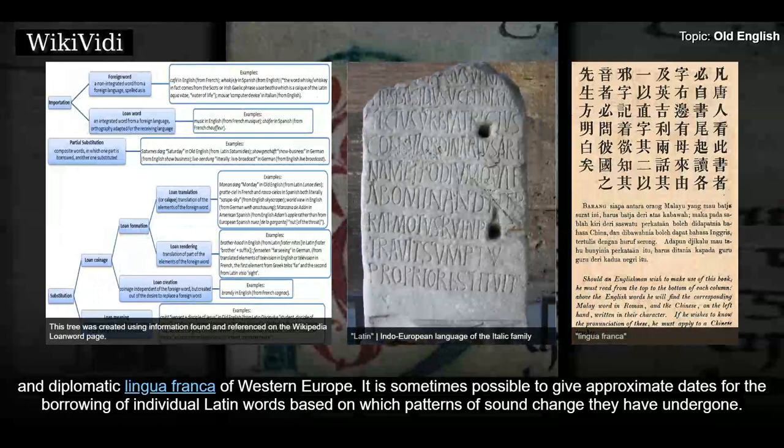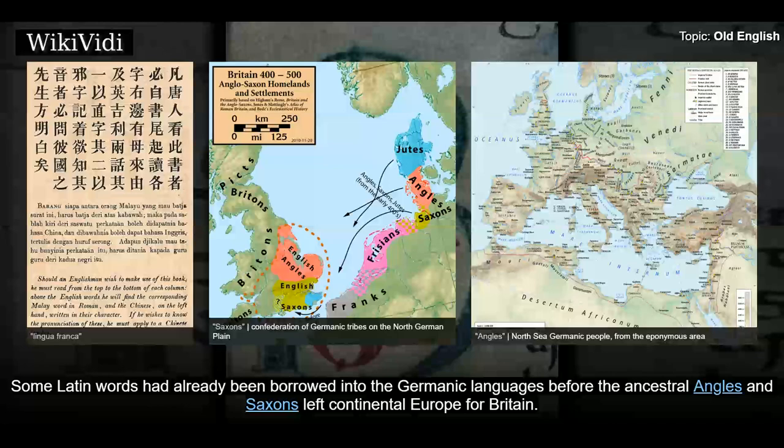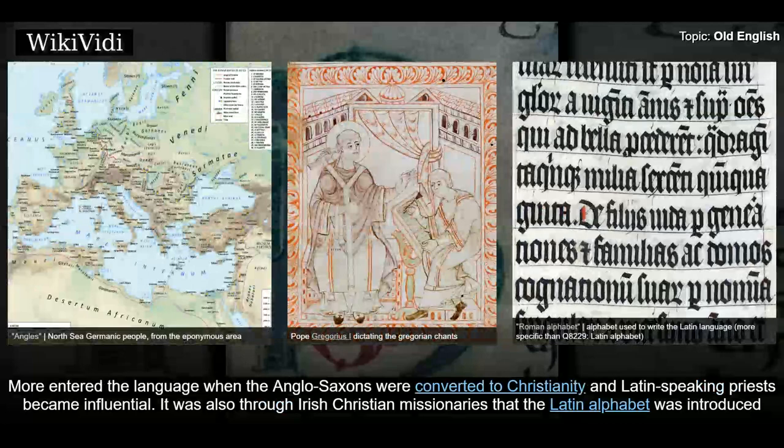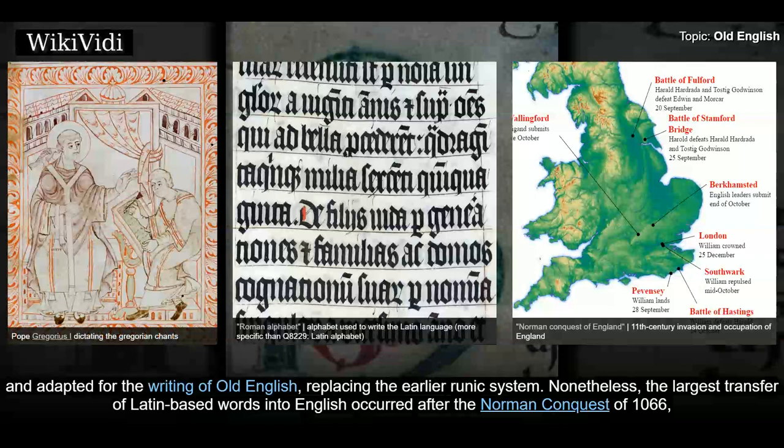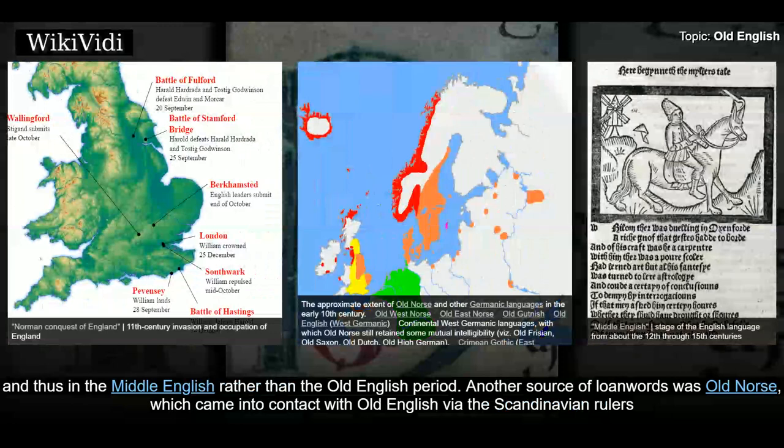It is sometimes possible to give approximate dates for the borrowing of individual Latin words based on which patterns of sound change they have undergone. Some Latin words had already been borrowed into the Germanic languages before the ancestral Angles and Saxons left continental Europe for Britain. More entered the language when the Anglo-Saxons were converted to Christianity and Latin-speaking priests became influential. It was also through Irish Christian missionaries that the Latin alphabet was introduced and adapted for the writing of Old English, replacing the earlier runic system. Nonetheless, the largest transfer of Latin-based words into English occurred after the Norman conquest of 1066, and thus in the Middle English rather than the Old English period.